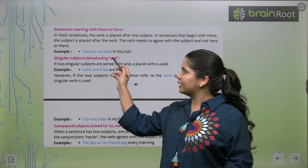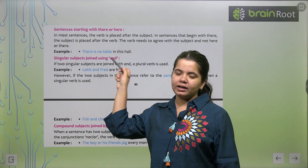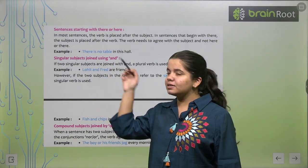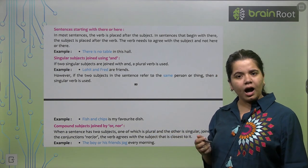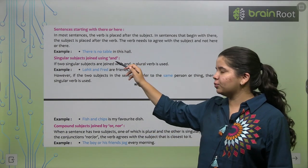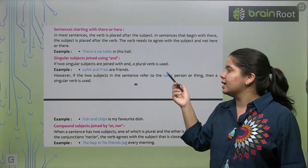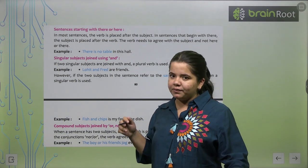Toh, wo sentences, jo humara there or here ke saath start ho raha hai, unke saath bhi humara jo verb hai, woh agree karna chahiye. Right. Aapko pehle ye dhyan rakhna hai ki, ye jo table hai, ye singular hai ya plural hai. Singular hai na. Toh, iske saath, humne is use kiya. Agar ye hota tables, toh, hum are use karte hai. It's very obvious.